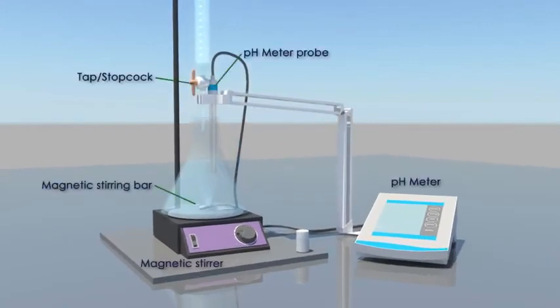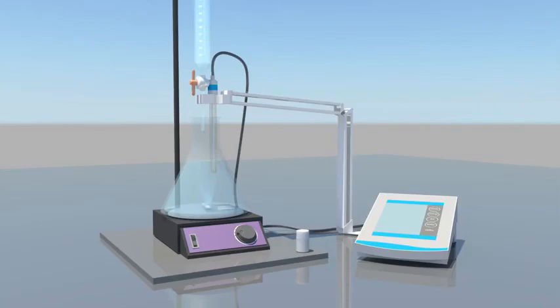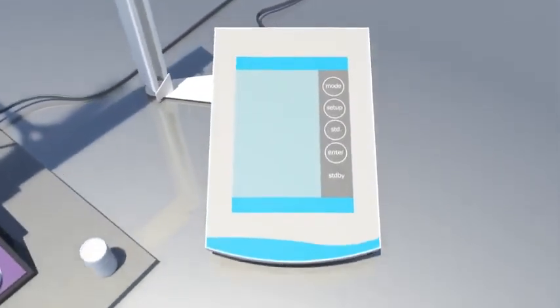And then what you do is you put a second magnetic bar that's like a plastic-coated magnetic bar, you drop it in the conical flask so that it spins and it stirs the solution for you the whole time that you're adding the acid or the base.